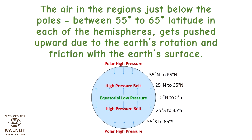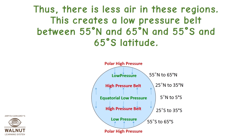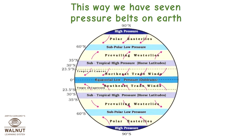The air in the regions just below the poles — between 55 degrees to 65 degrees latitude in each of the hemispheres — gets pushed upwards due to the earth's rotation and friction with the earth's surface. Thus, there is less air in these regions, creating a low pressure belt between 55°N–65°N and 55°S–65°S latitude. This way, we have seven pressure belts on earth.